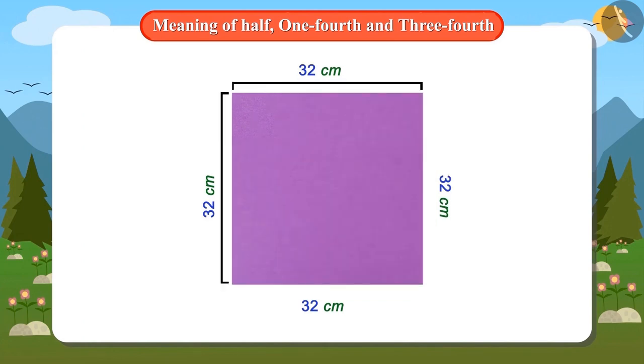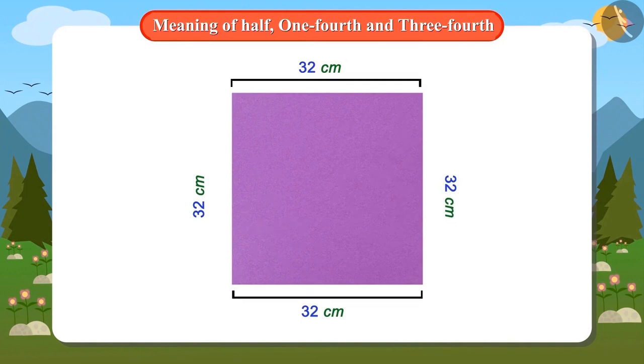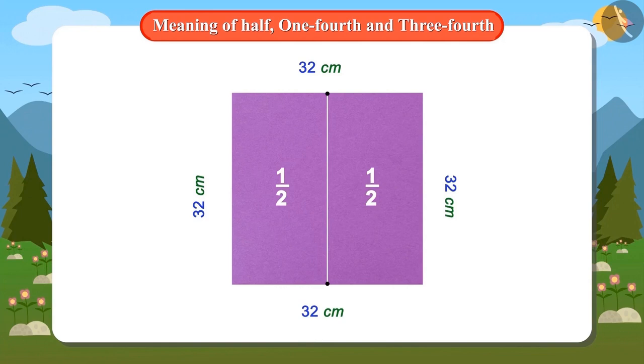You just paid attention to cutting the sides in half, while we have to cut the whole figure in half. This means that we must first divide this cardboard into half. For this, mark the half on the top and bottom sides and draw a line by joining these marks. Now these two parts are half of this cardboard.